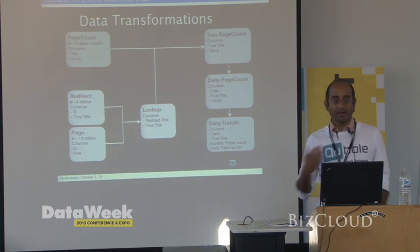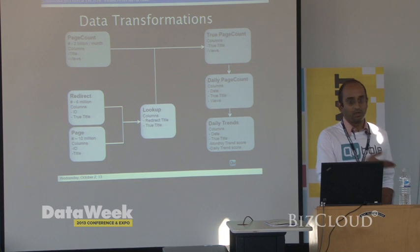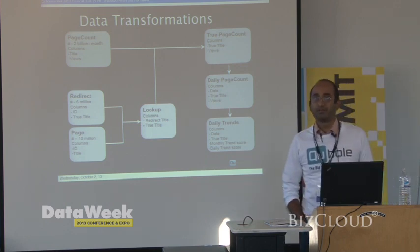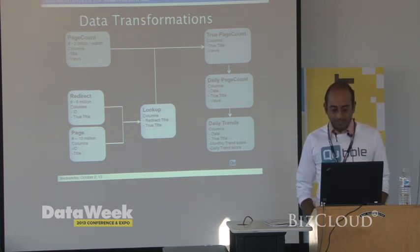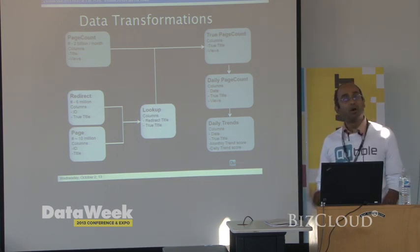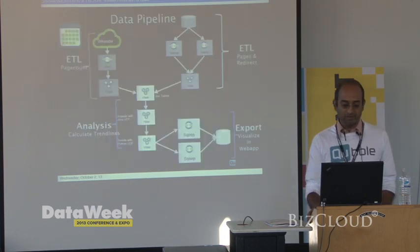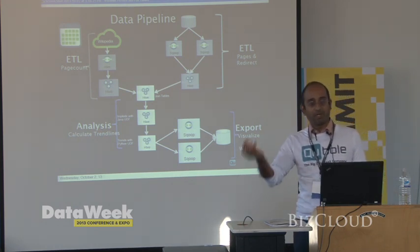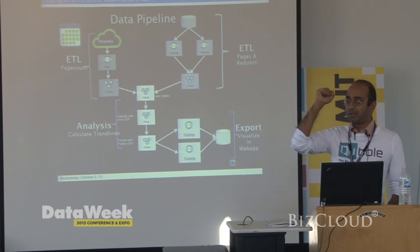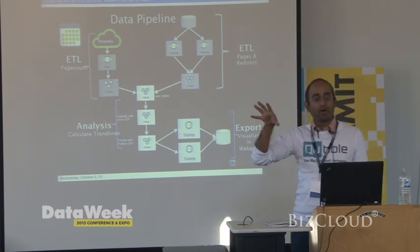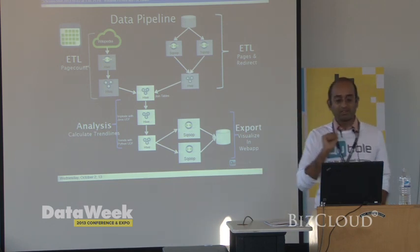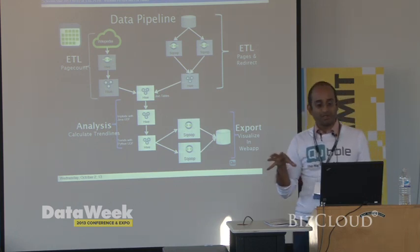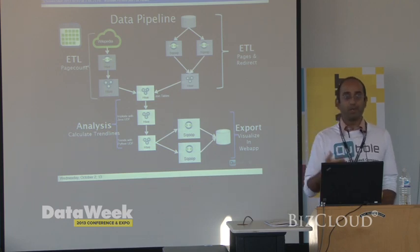The trend analysis we did was: over a month, what was the slope, and whether over the last day the slope has been radically different. In terms of technologies, we did all our transformations and analysis using Hive. We had a script that would run periodically, pull data from wherever Wikipedia published it, and dump it into a Hive table. Another script periodically grabs the MySQL dump Wikipedia publishes and dumps it into another Hive table. Then we have a series of Hive queries that first join these two tables to get the canonical count, aggregate to get daily counts, and use a Python script to calculate the trend.